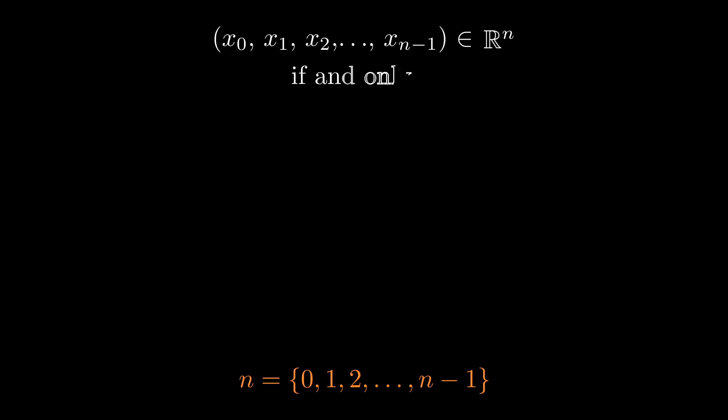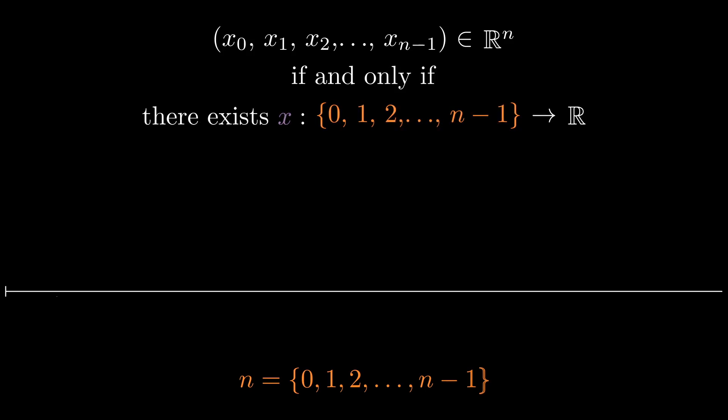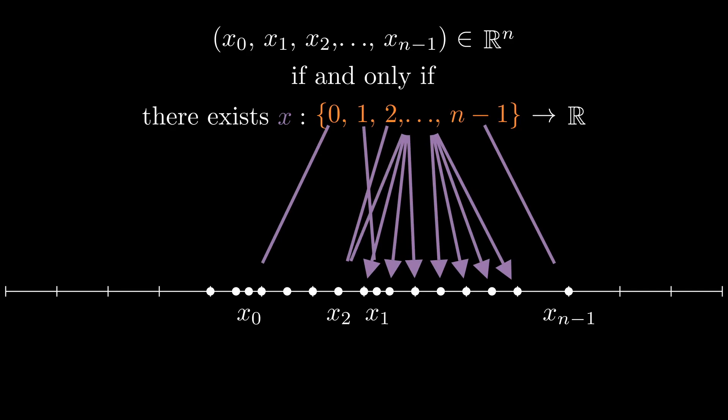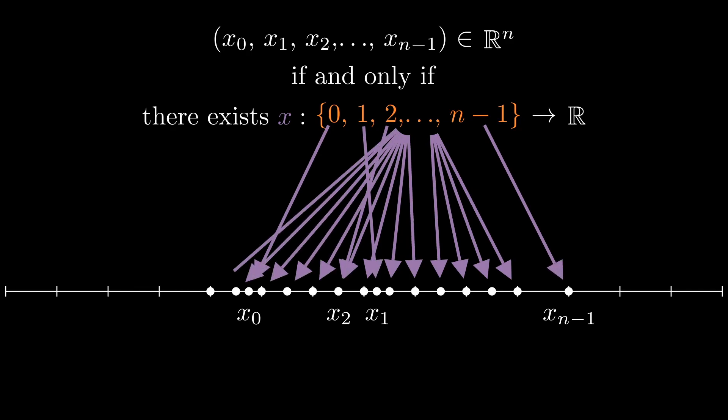You get the pattern. If we consider n as an ordinal, an n-tuple corresponds to a function on the set n. As before, the n-tuple and the function x are just different perspectives on doing the same job, which is picking out n real numbers.